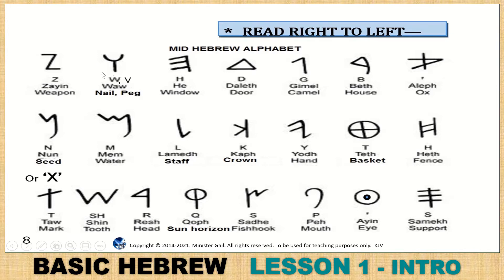The window, tent peg, Zayin — Z for Zorro's sword. Fence, connecting up, basket, hand, crown, staff, water, seed. Support, the third eye, the eye — which is just a mark in Hebrew. Peh for the mouth, fish hook. There is a woman's symbol. Q — the woman's symbol. Sun on the horizon, Resh, teeth — looks like teeth. Shin, Shiva, teeth and tearing, chaos. And this is the mark — the last letter — cross and covenant. So it used to look like a cross, the last letter.